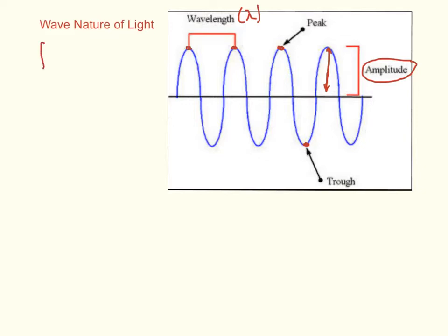There's also a frequency, which you can't really show on this diagram. It's abbreviated with a Greek letter — sorry, I didn't draw it very well, it looks kind of like that. You'll see it written a whole bunch of times and you'll get used to it. Frequency is the number of waves that pass any point in a second.